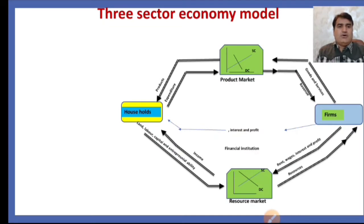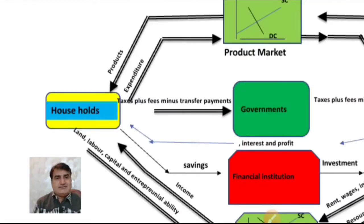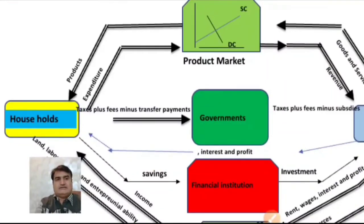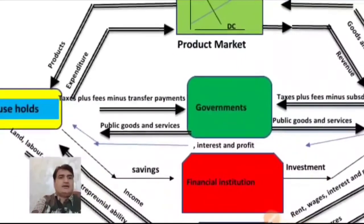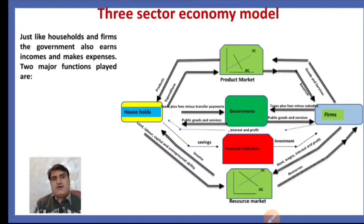Now another sector is introduced — financial institutions — where households deposit their savings and firms borrow funds for investment. The government sector is also introduced in the economy. Households pay taxes plus fees to the government and receive transfer payments from the government, and firms pay taxes plus fees and receive subsidies from the government. The government provides public goods and services to households and firms against the income received in the form of taxes and fees. This is basically the three-sector economy model.